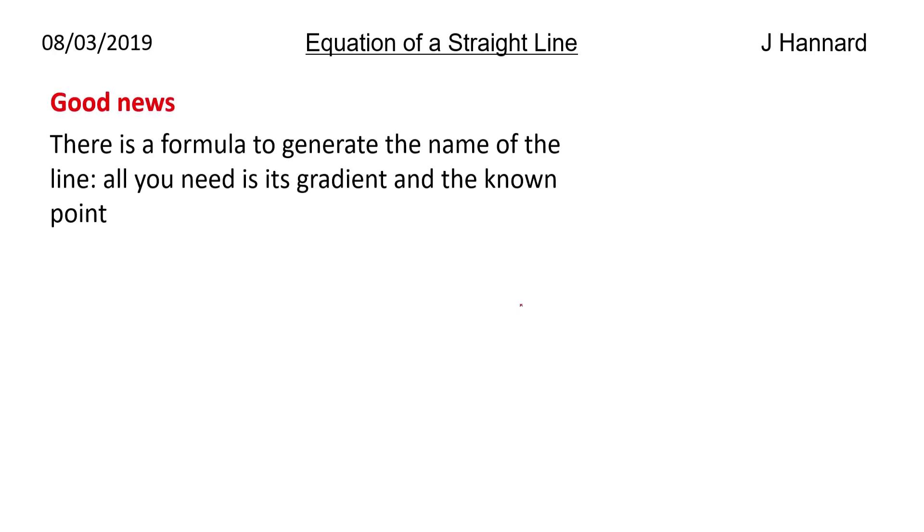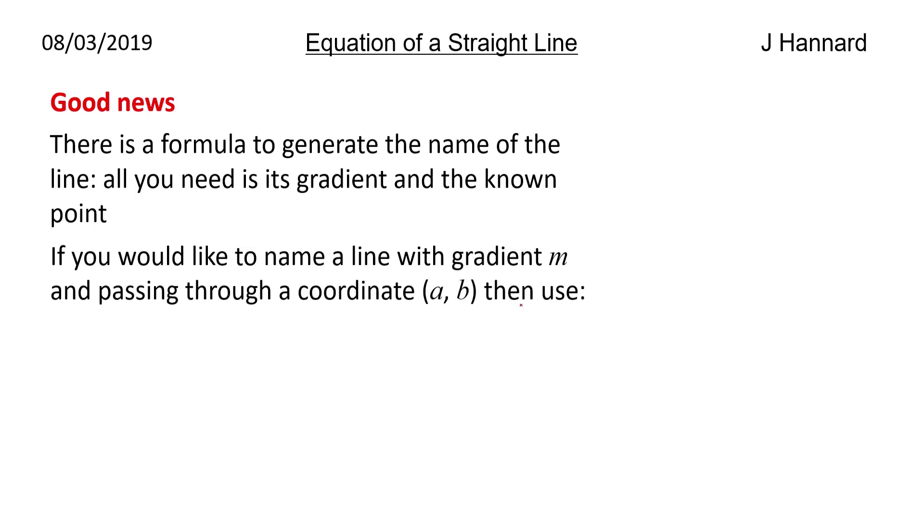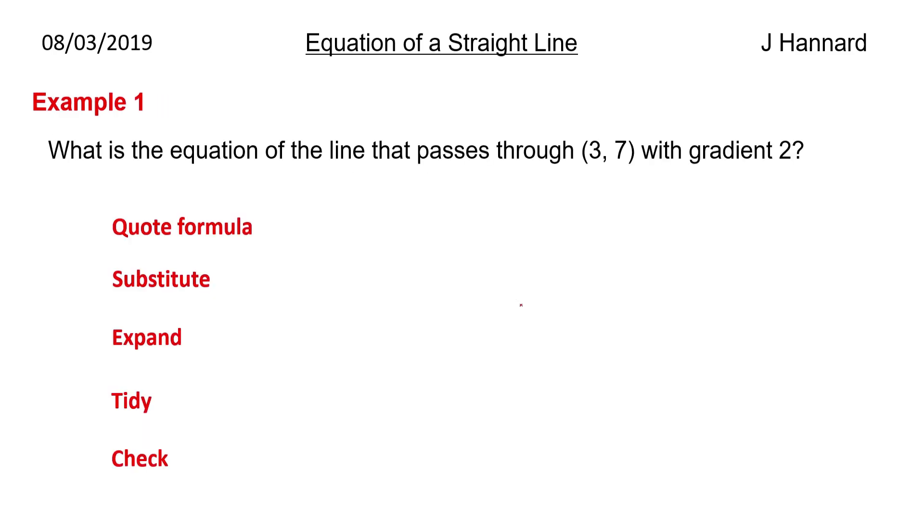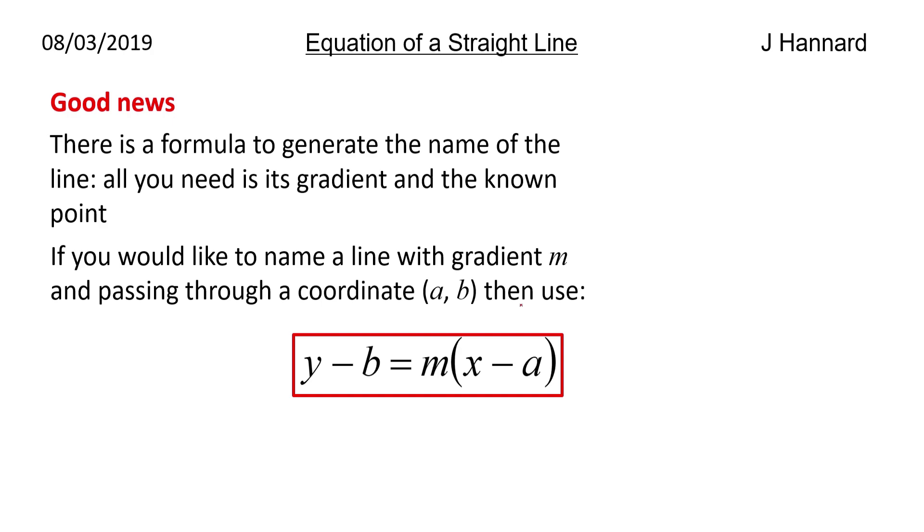Good news, there is a formula, otherwise this video wouldn't be a thing. There is a formula to generate the name of the line. All you need is its gradient and the known point. So if you'd like to name a line with a gradient m and that passes through any coordinate (a, b), then we use this formula: y minus b equals m brackets x minus a. So write that down, whatever you want imprinted into your memory. b is the y coordinate and a is the x coordinate and funnily enough they're paired together, so they're sort of grouped together in the coordinates in the formula.